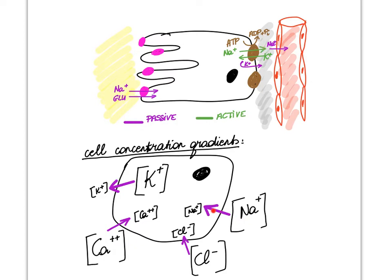Remember, sodium likes to leak in passively, so it takes energy to pump it out. Similarly, potassium must be pumped in against its concentration gradient. There are many, many leakage channels for potassium, so as soon as potassium is pumped into the cell, it almost immediately leaks out. So we're losing all of these positively charged ions on this side of our cell, and that sets up an electrochemical gradient that sodium can take advantage of.